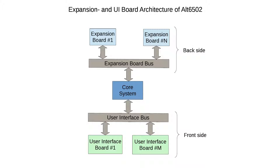The system is divided into three major parts. The core contains the CPU, memory and control logic. It has everything together and it's acting as a hub for the information transfer in the system.